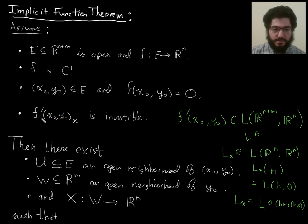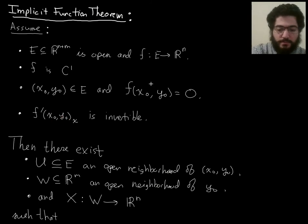And notice that the assumption is based on just the one point, (x_0, y_0). So, it's not making an assumption about f' on an open set. It's just at one point. Then, the conclusion, what the implicit function theorem provides will be, and what we will have to provide in the proof, will be some open neighborhood U of (x_0, y_0), and some open neighborhood W of y_0, and some function that I'm going to call capital X, defined on W.